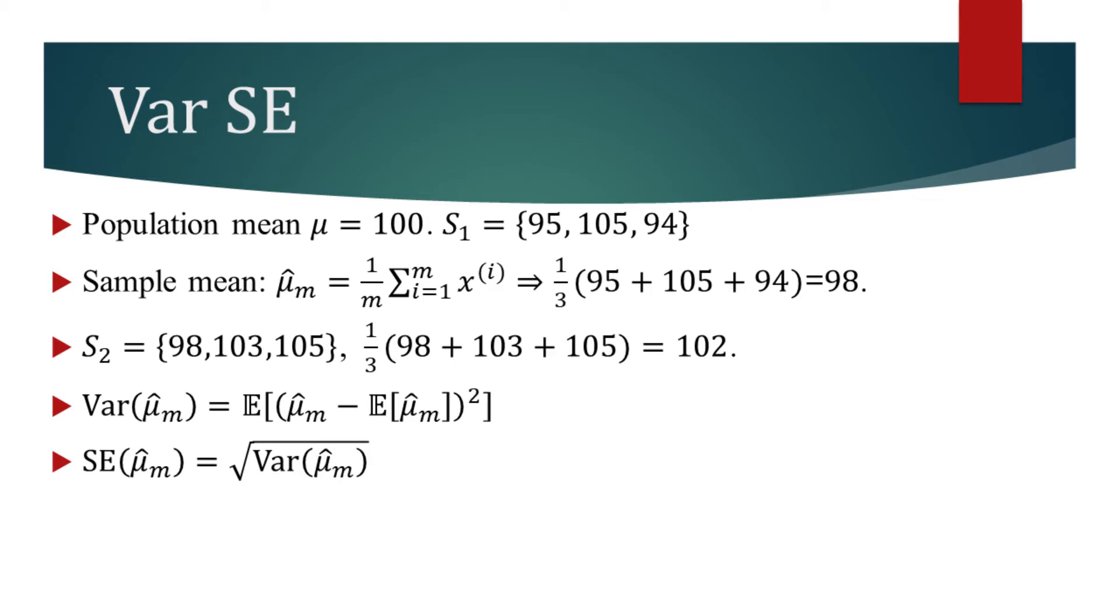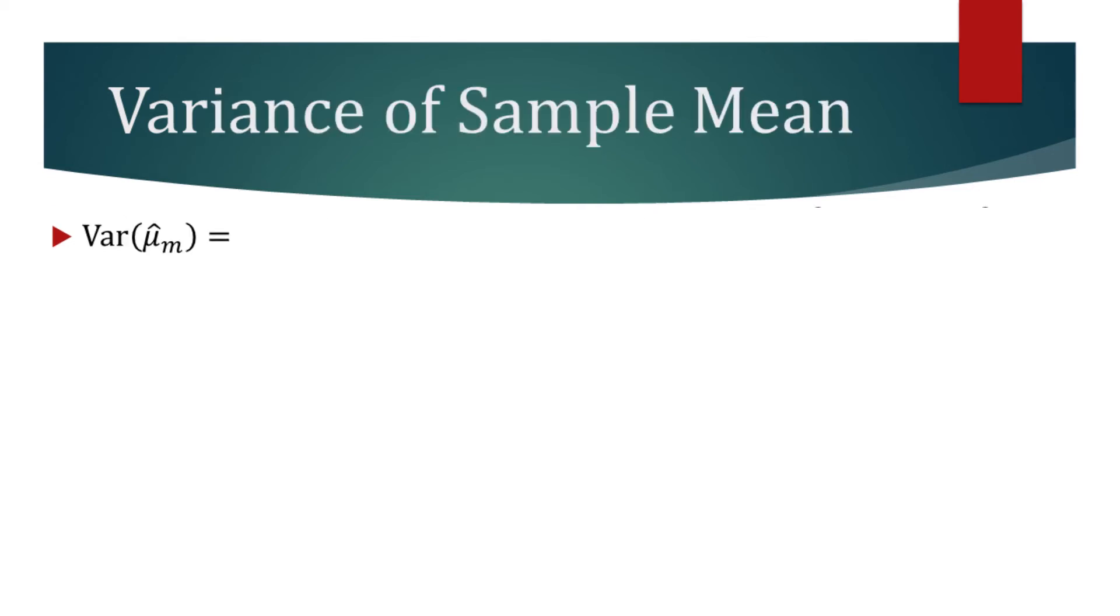Let's now find the variance and the standard error of the sample mean. First, let's substitute the estimator with its definition. When a constant is multiplied by the random variable, variance equals the constant squared times the variance of the random variable.